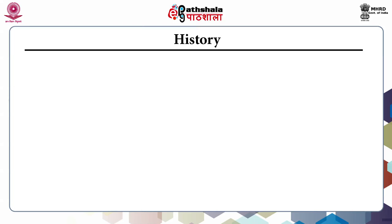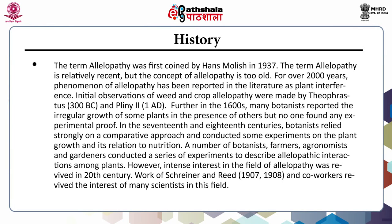The term allelopathy was first coined by Hans Mollisch in 1937. The term is relatively recent but the concept of allelopathy is very old. For over 2000 years, the phenomena of allelopathy has been reported in the literature as plant interference. Initial observations of weed and crop allelopathy were made by Theophrastus in 300 BC and by Pliny II in 1st AD. Further in the 1600s, many botanists reported irregular growth of some plants in the presence of others but found no experimental proof.